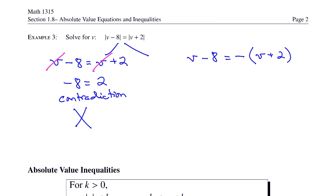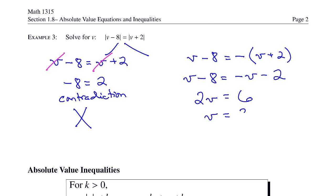Let's take a look at the right side. First, distribute the negative on the right. That gives v minus 8 equals negative v minus 2. Move the negative v from the right to the left side — that gives me 2v. Move the negative 8 from the left to the right — that gives me positive 6. Dividing both sides by 2, I get v equals 3. So we do get a solution on the right side, and the solution set is {3}.